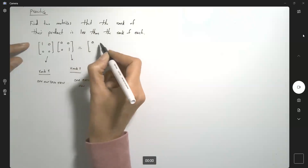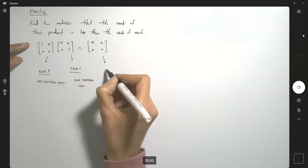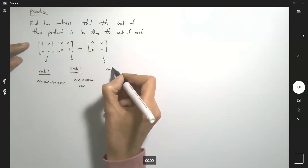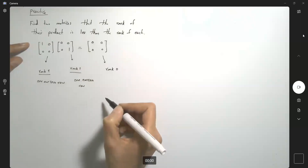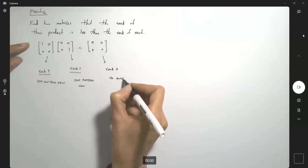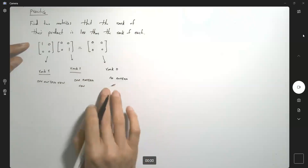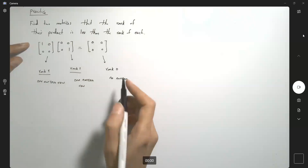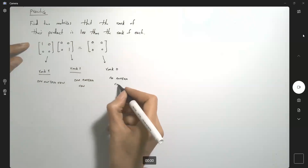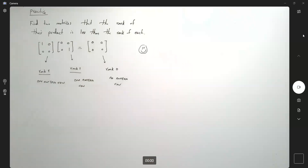What about the product? The product creates the zero matrix. The rank of the zero matrix is zero — no non-zero row. Remember these examples.